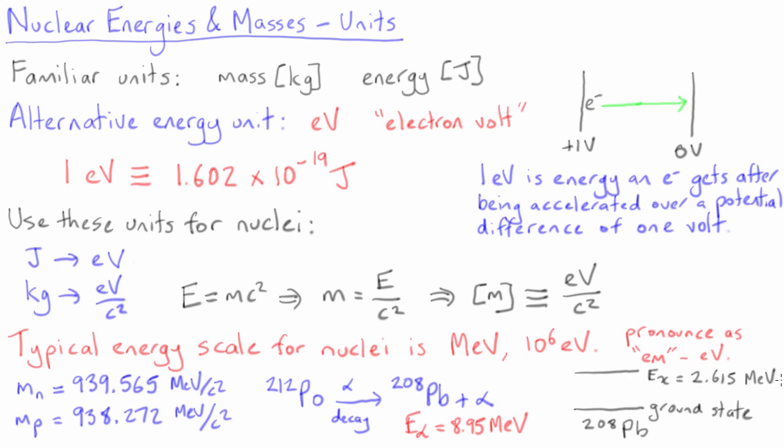If this state were to decay, it would emit a gamma ray with an energy of 2.615 MeV. In textbooks and papers about nuclear and particle physics, the vast majority of the time you will find masses and energies described in terms of MeV, or sometimes other multiples of electron volts, such as keV meaning thousands of electron volts, or GeV meaning billions of electron volts.